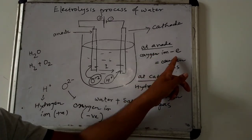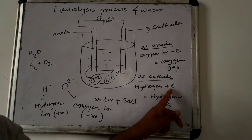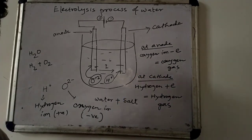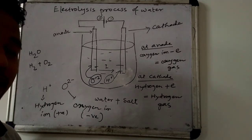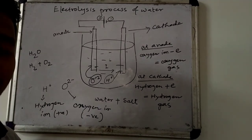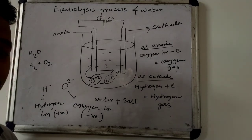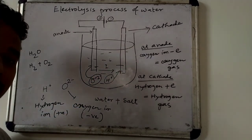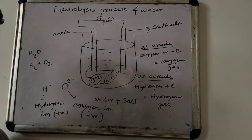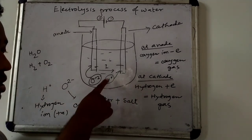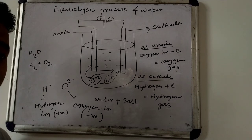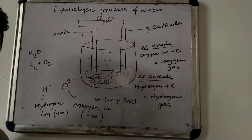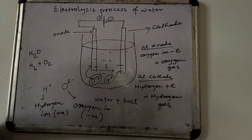Now why does oxygen lose electrons and hydrogen gain electrons? Because the oxygen ion is a negative ion — it has excess electrons. Negative ions always contain an excess of electrons, and that is why at the anode, the oxygen ion releases its excess electrons and forms oxygen gas. At the cathode, since the hydrogen ion is positively charged, positively charged ions always have a deficiency of electrons, and that is why hydrogen gains electrons and forms hydrogen gas.